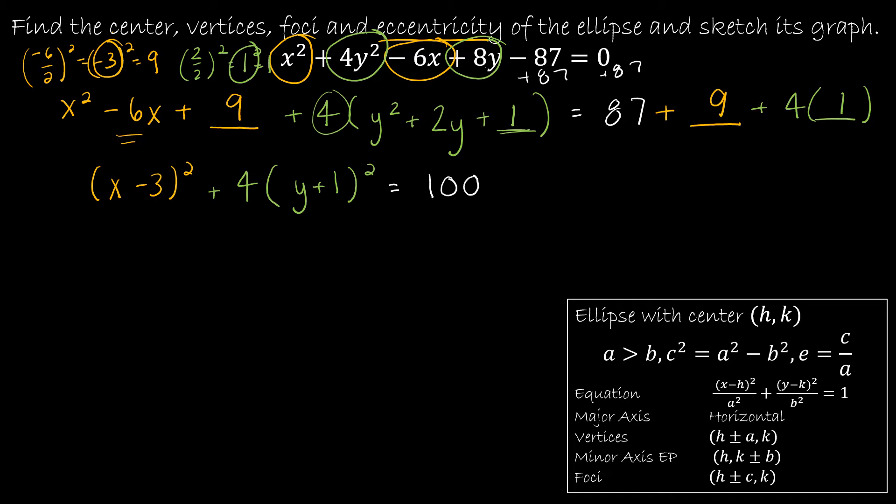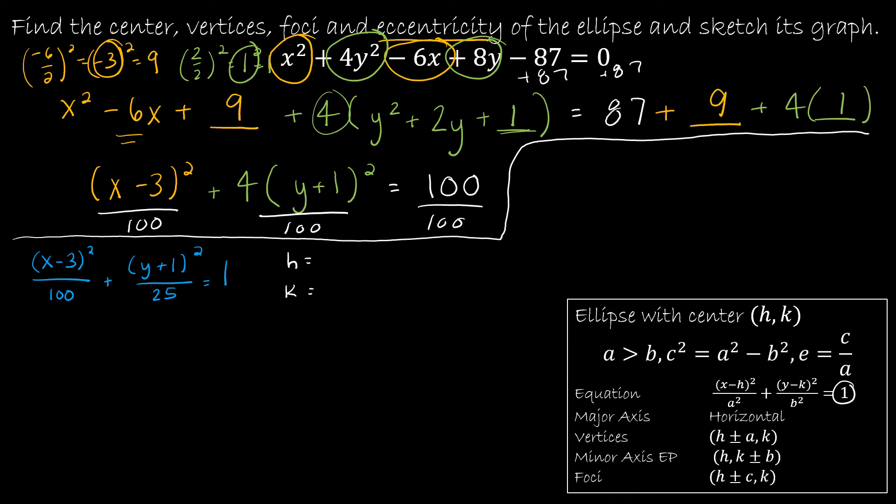Now, I don't have things in the format that I want because I need this to be equal to 1. So now I'm just going to divide everything by 100. That leaves me with x minus 3 quantity squared divided by 100 plus 4 and 100 will reduce to 1 and 25. So this would be y plus 1 quantity squared over 25 equals 1. And just know that you're never going to get nice numbers like this. I purposely gave us nice numbers like this so that we didn't have to do a lot of square root of this, radical that.